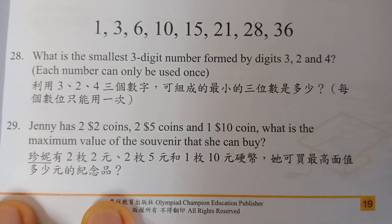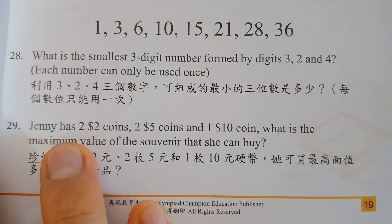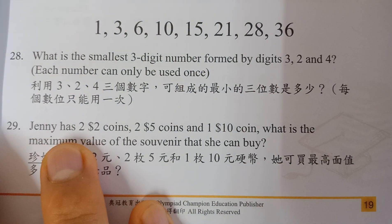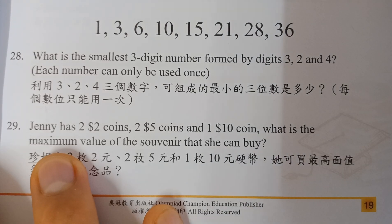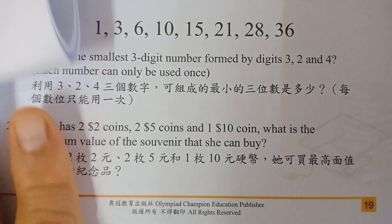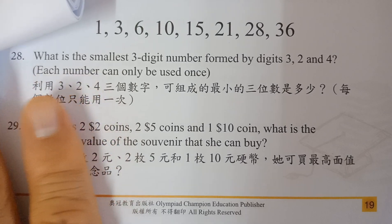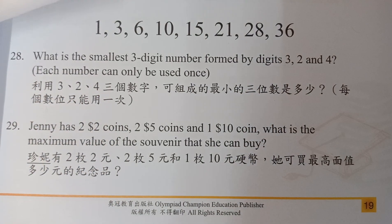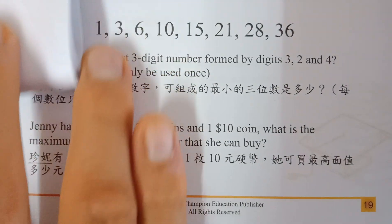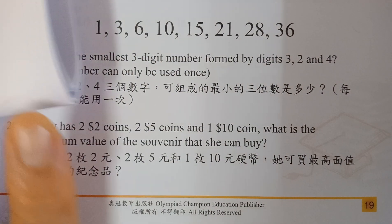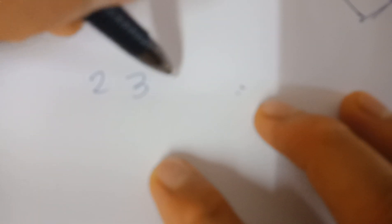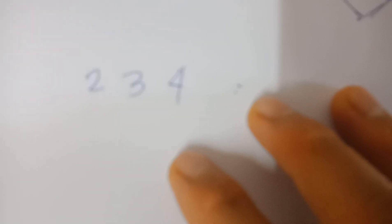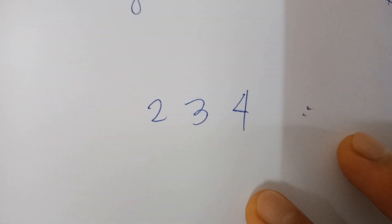Number twenty-eight: what is the smallest three-digit number formed by digits 3, 2, and 4, each used only once? To get the smallest number, the hundreds digit must be the smallest: 2. The tens digit is 3, and the units digit is 4. So 234 is the smallest three-digit number that can be formed from 3, 2, and 4.